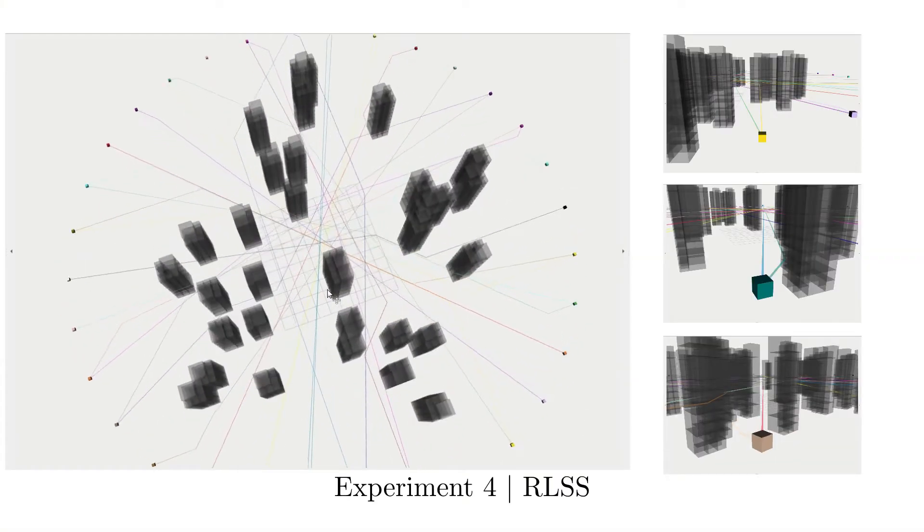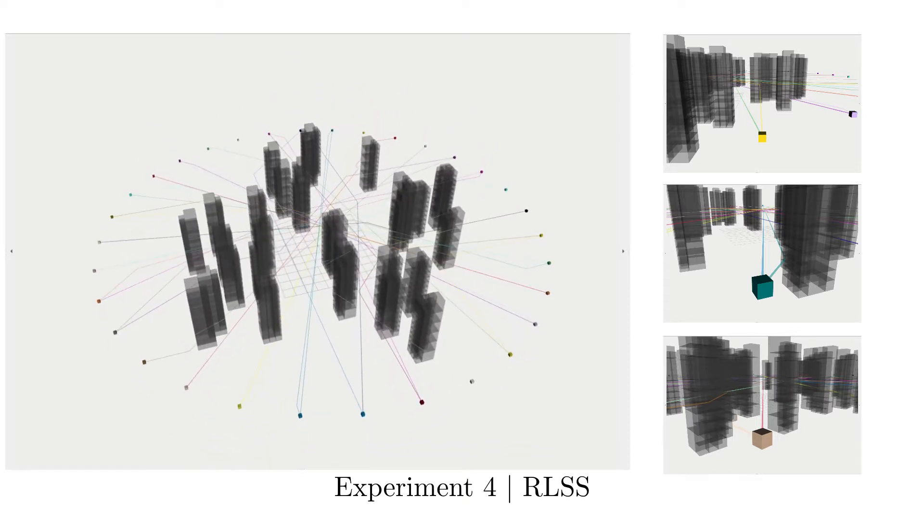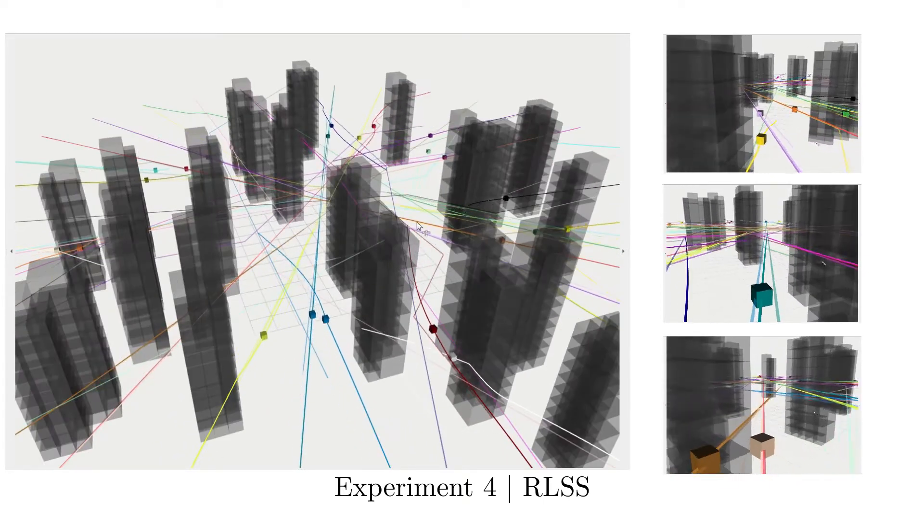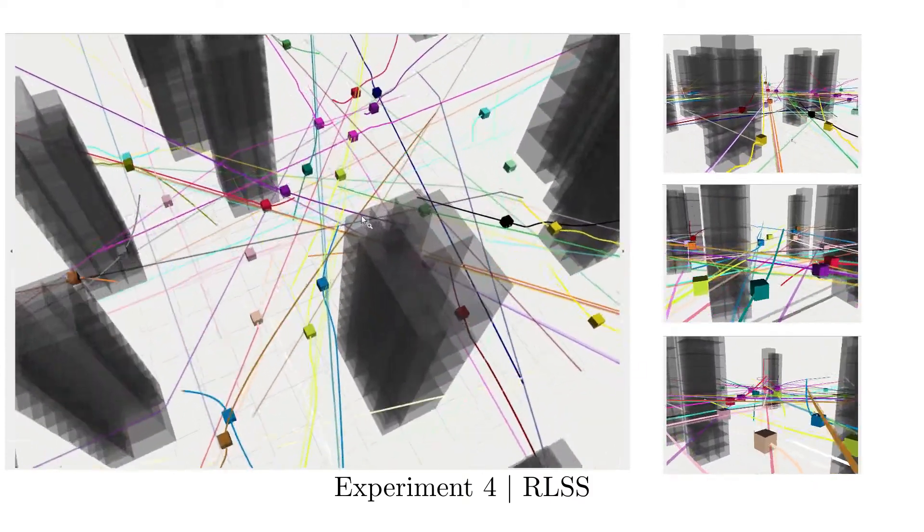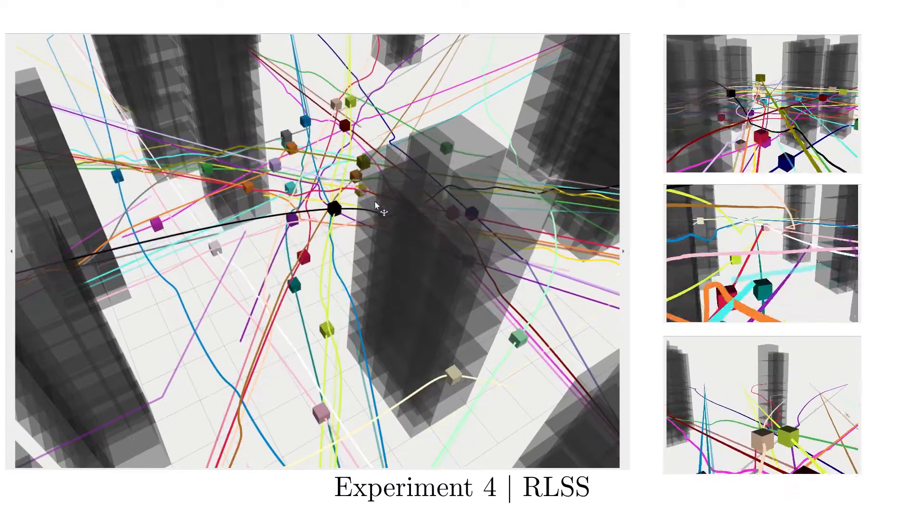In this experiment, 32 robots are arranged in a circular formation in a forest-like environment and the task is to swap the positions of the robots at the antipodal points of the circle. Desired trajectories are single-agent shortest paths from start to goal positions. RLSS does not result in any collisions or deadlocks in this scenario.